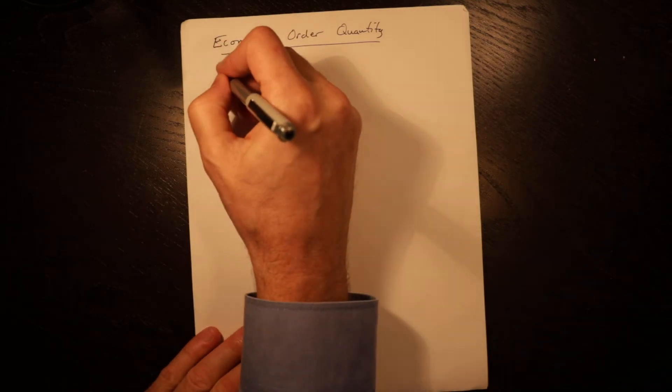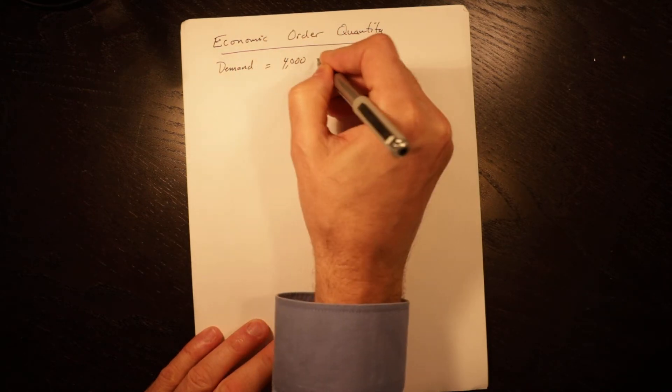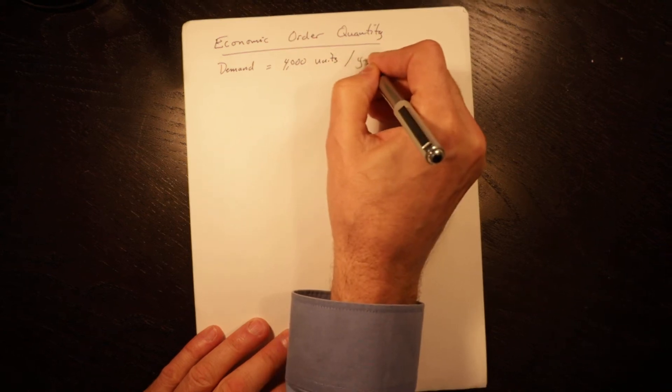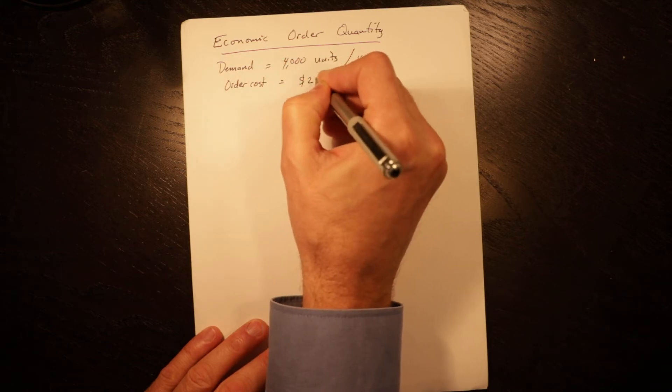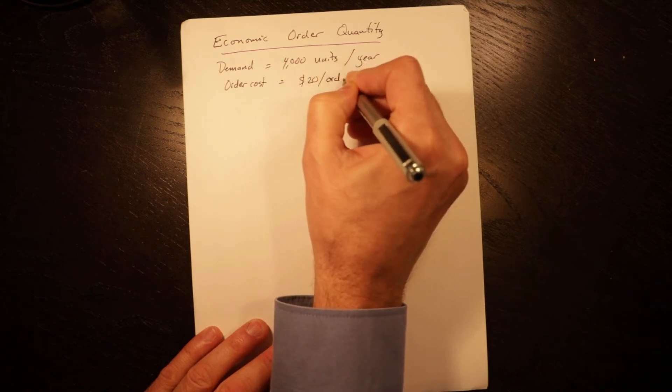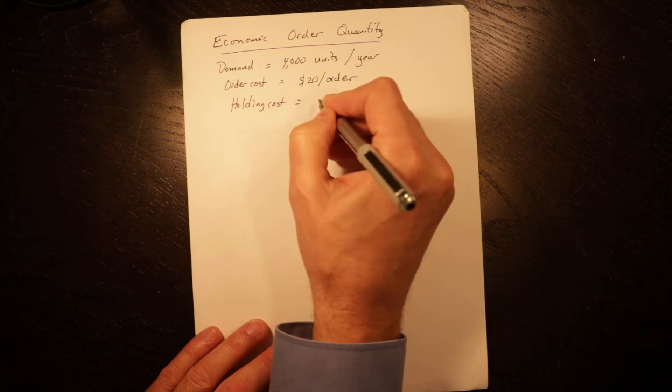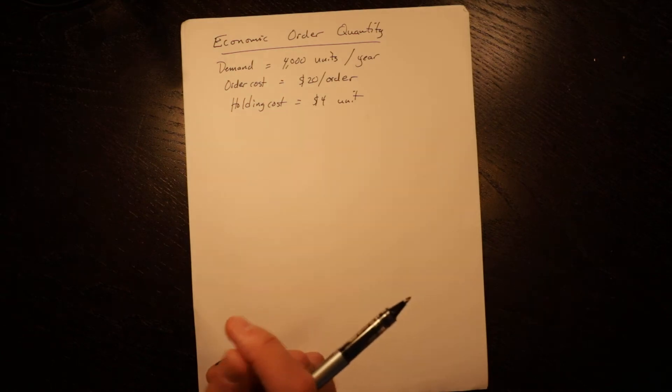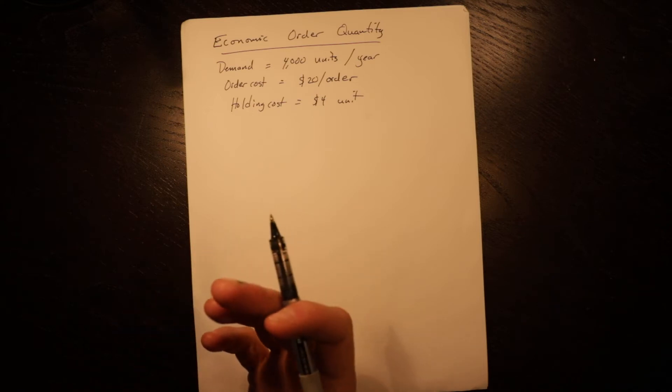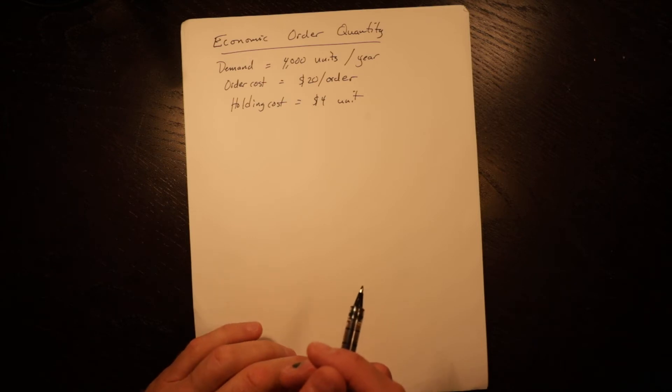Here we have a company whose demand is equal to 4,000 units per year, order cost is equal to $20 per order, and holding cost is equal to $4 per unit. Holding costs can either be a percentage of acquisition cost or a fixed number. If it was a percentage, you would calculate the number based on your acquisition cost, but in this case we're just doing a fixed amount.